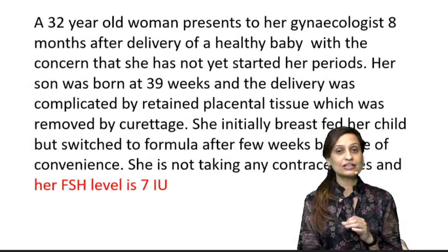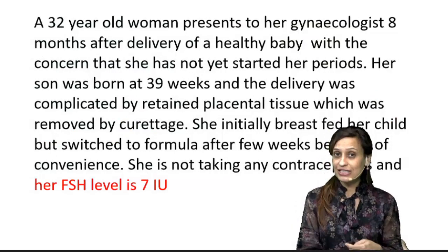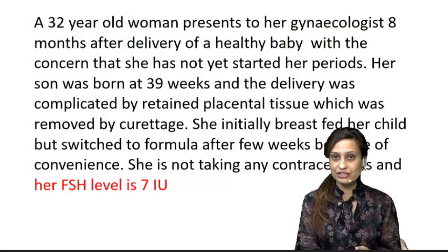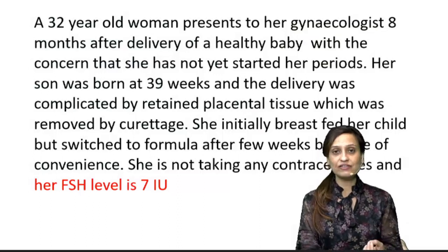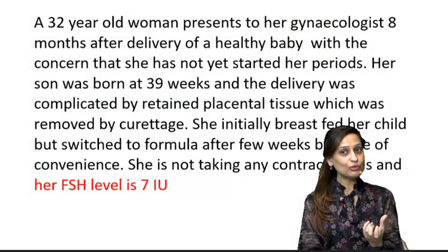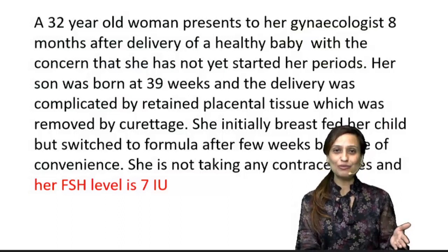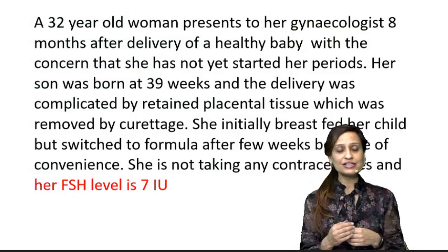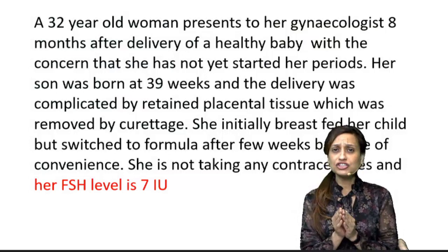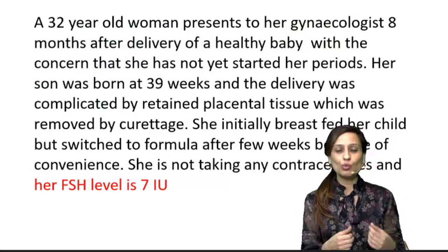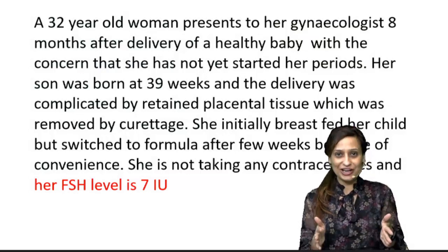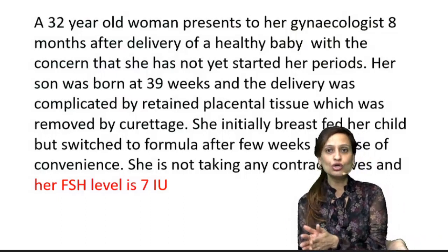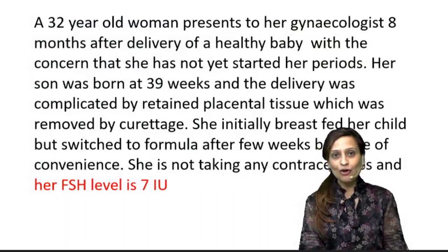The next keyword is that her current FSH value is 7 international units. Is that a normal value? Yes. In normal reproductive-age women, FSH should be less than 10 international units, so 7 is absolutely normal. The normal range is 1–10 international units, but values of 1, 2, or 3, while within range, are suppressed values. Here, FSH of 7 is close to normal for reproductive-age women. Now we have all the keywords.